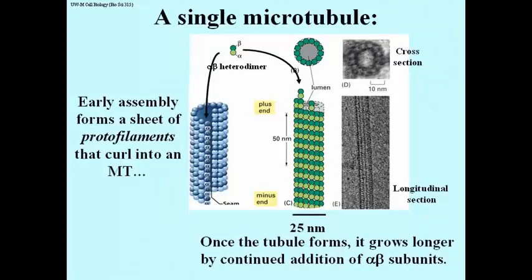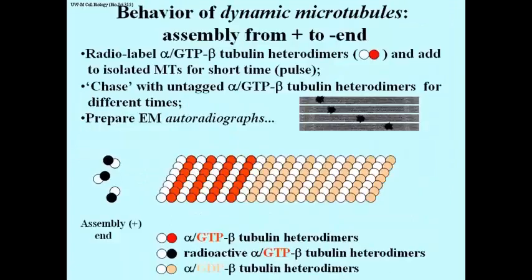The microtubule can continue to grow longer by the addition of more alpha-beta subunits. Remember that these alpha-beta subunits are adding as alpha-GTP beta subunits. This growth by addition to the plus end eventually results in GTP hydrolysis.